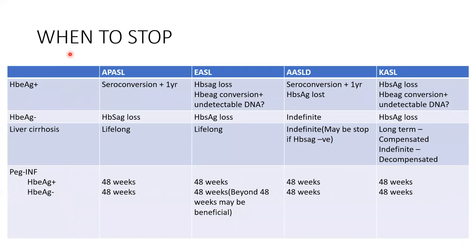When do we stop treatment? The simple way to remember: if EAG positive, the aim is to make it EAG negative. If EAG negative, the aim is to achieve HBsAg loss. Most of the time it becomes indefinite treatment. Whenever there is cirrhosis, treatment is lifelong because we don't want the patient to progress to HCC.